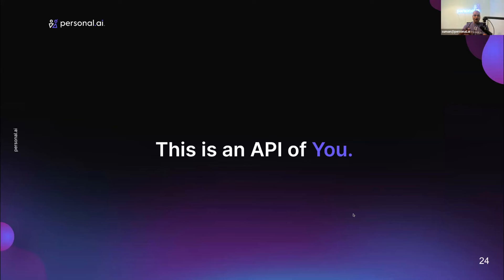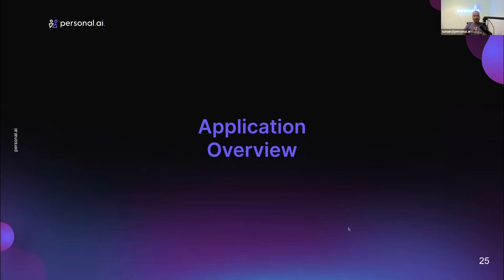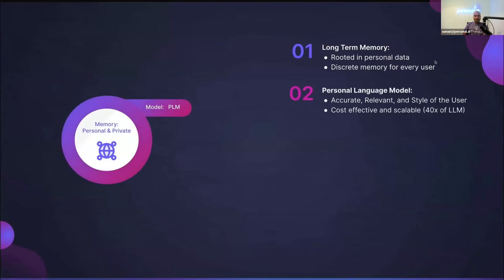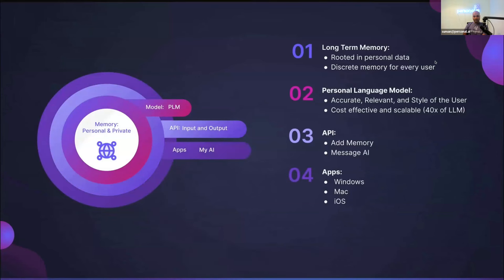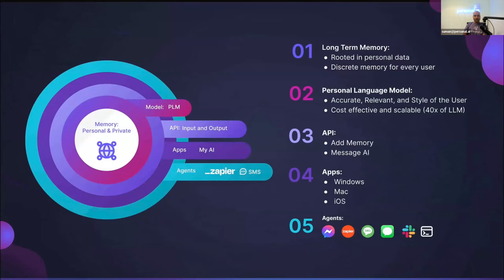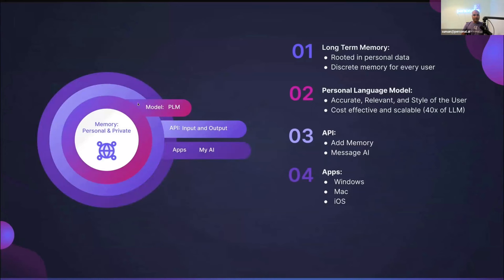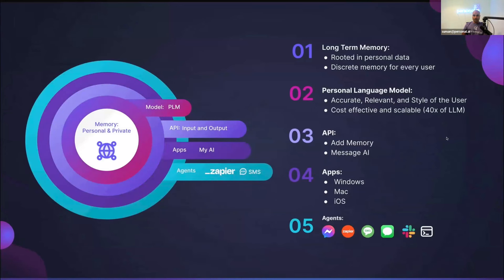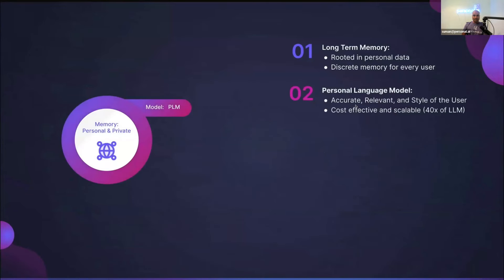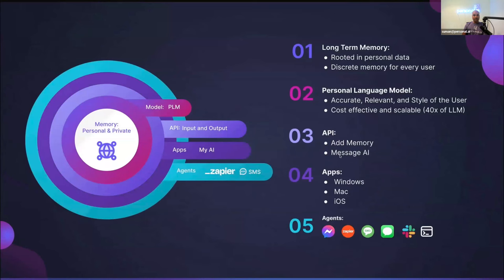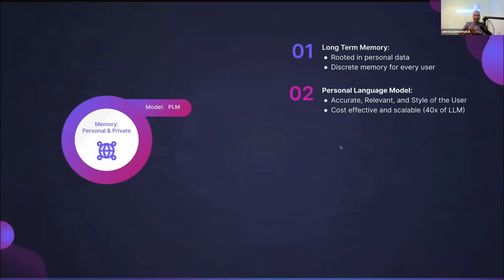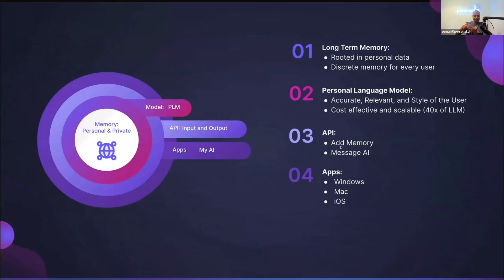On the application side, it's not only model development — we have built a full stack of applications for developers, businesses, personal use, and specific external leads. At the base is long-term memory rooted in your personal data. The second key aspect is the personal language model itself, which continuously scales. Every model gets its own API. The API supports ingestion of data, which is your new memory, as well as messaging your AI, which is inference. We also have apps — Windows, Mac, iOS — and Android is in progress.